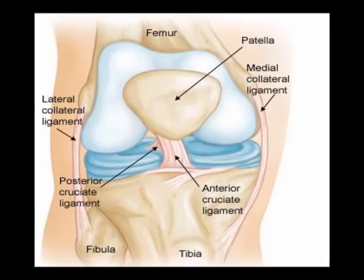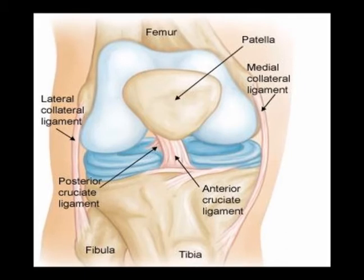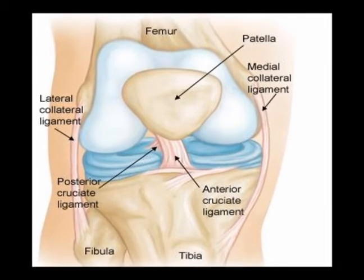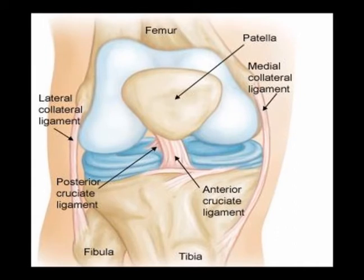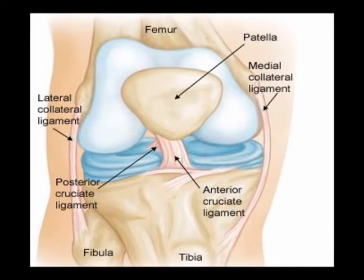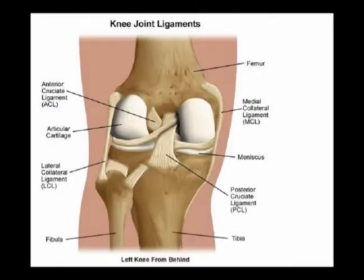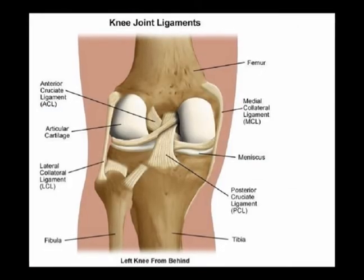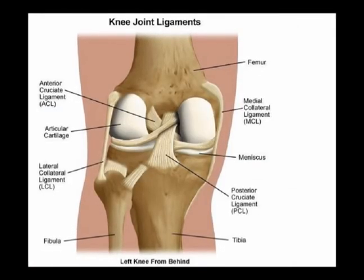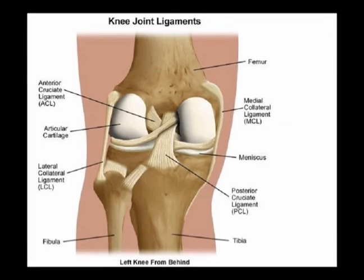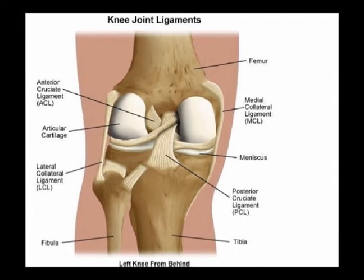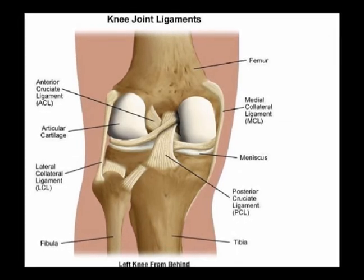The PCL originates on the femur, on the lateral edge of the medial femoral condyle and deep inside the intercondylar notch. It runs inferior, posterior, and lateral and attaches to the posterior tibia, just inferior to the tibia's articular surface.